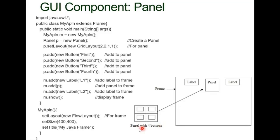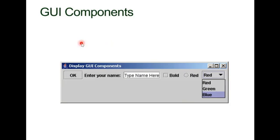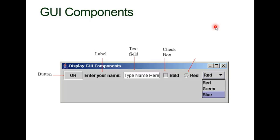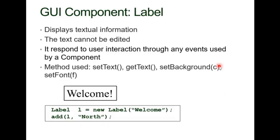So you understand the concept — the four button elements are considered as a single composite element using the panel. Now let's look at the graphical user interface components. The first one is Button, the second is Label, the third is TextField, the fourth is CheckBox, the fifth is RadioButton, and there is also the Choice drop-down menu.